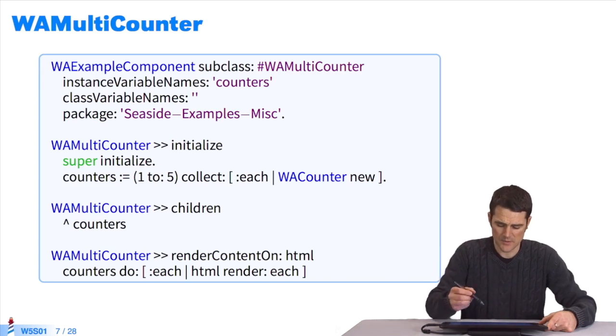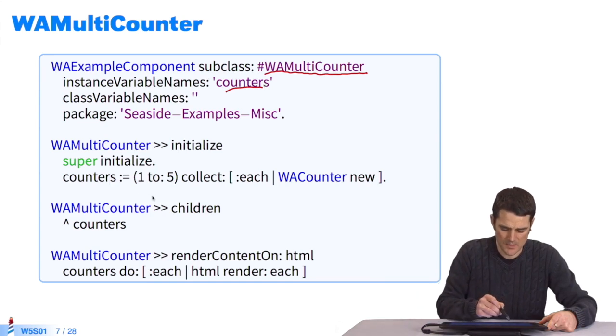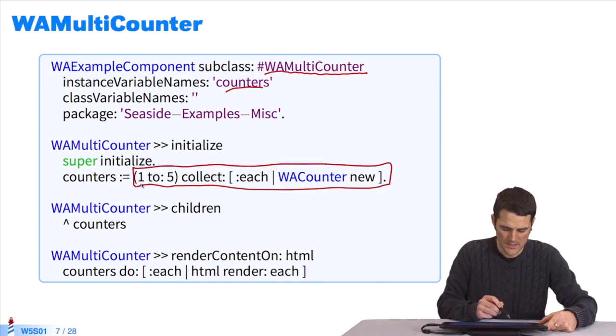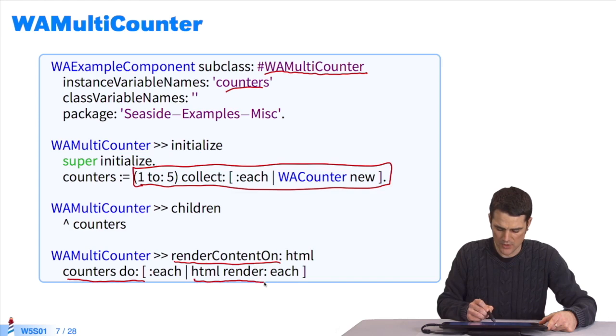How do we do this in Seaside? It's extremely simple. I'll define a component subclass called WAMultiCounter with instance variable counters, defining a collection of counters. In method initialize, I'll create a collection of five counters. Then I'll have the method renderContentOn, where I'll browse my counter collection with a do, and ask each counter, at least the HTML object, to render each of the counters. I use a special method, render. This render method of the HTML object allows you to ask a component to render itself, draw itself in HTML.